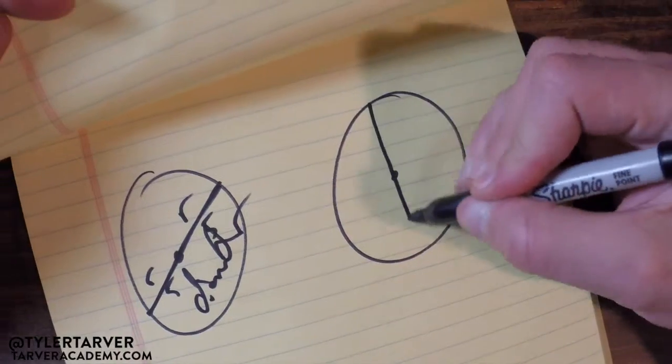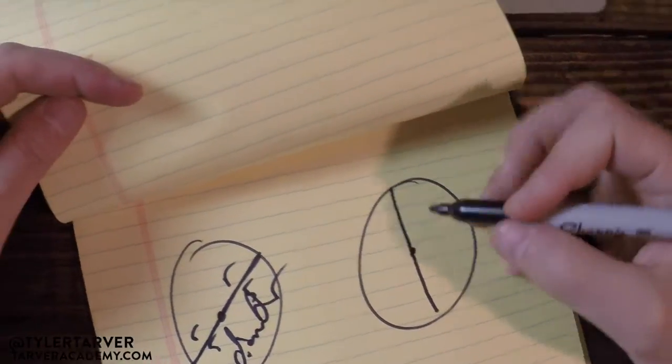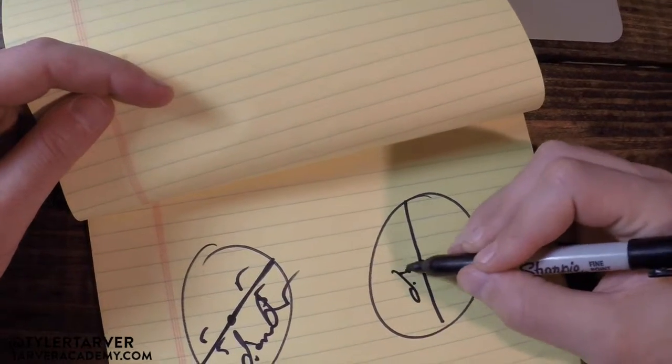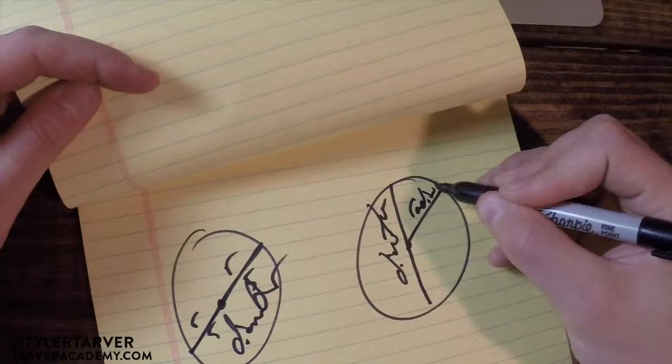So, for instance, what would this be called? Diameter. And this is a radius.